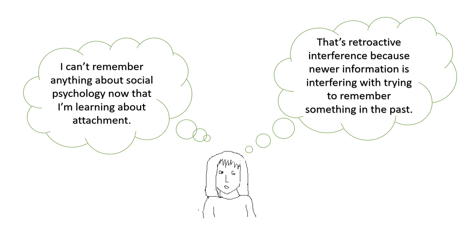There are two types of interference: retroactive and proactive interference. Retroactive interference occurs when newer information interferes with trying to remember something in the past. For example, if you're learning about attachment, it may interfere with your memory for social psychology, if you've learned that previously.